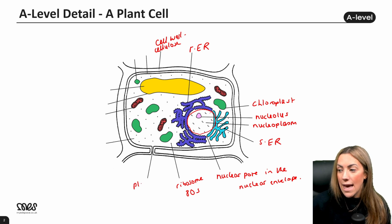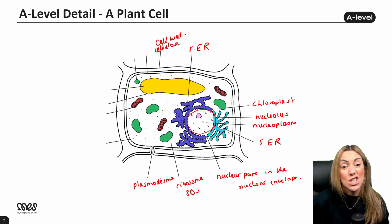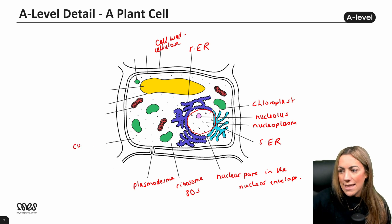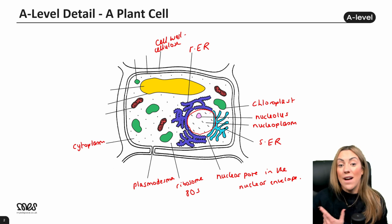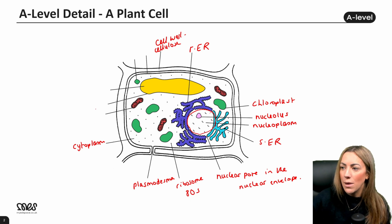This is called a plasmodesma, which is basically a channel through the cell wall which connects adjacent plant cells. So substances can move between the plant cells, such as amino acids or glucose or water. Here we've got the cytoplasm which fills the cell. And we find the cytoskeleton in the cytoplasm as well.